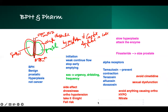Teach patients to change position slowly and take this medication at night. You see the same themes repeating because these are systems — every system talks to each other. When doing pharmacology, use the underlying pathophysiology, and things will start making sense. These medications affect the prostate — either making the prostate smaller or preventing the smooth muscle from contracting — opening the urethra for better flow.